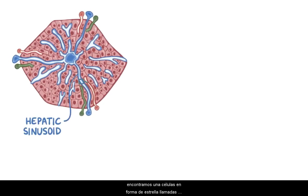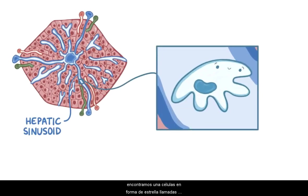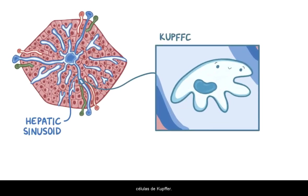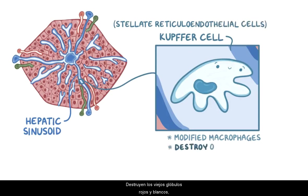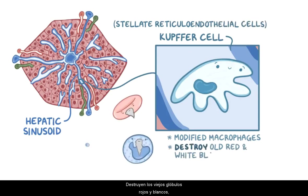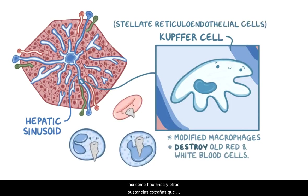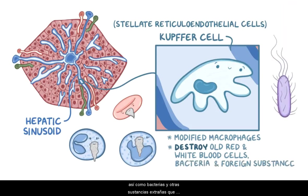Now speaking of starfish, if we zoom back into the hepatic sinusoid, we'll notice star-shaped cells called Kupffer cells. Kupffer cells are modified macrophages, and they're also called stellate reticuloendothelial cells. They destroy old red and white blood cells, as well as bacteria and other foreign substances that enter the sinusoids.